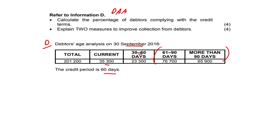So who is complying? The $35,300 and the $23,300. We put it over our total amount. So this is what the calculation looks like.